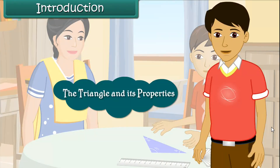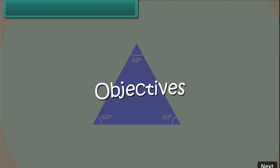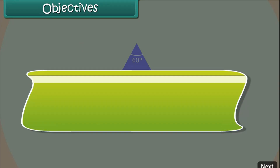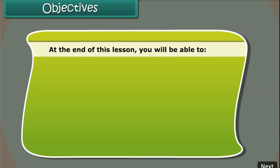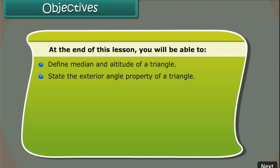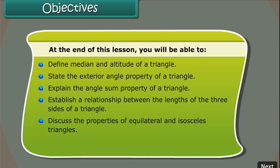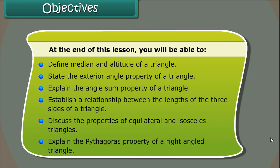In this lesson, you will learn about the triangle and its properties. At the end of this lesson, you'll be able to: define median and altitude of a triangle; state the exterior angle property of a triangle; explain the angle sum property; establish a relationship between the lengths of the three sides; discuss the properties of equilateral and isosceles triangles; and explain the Pythagoras property of a right-angled triangle.